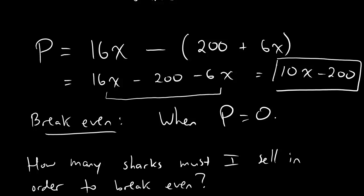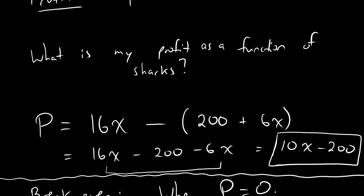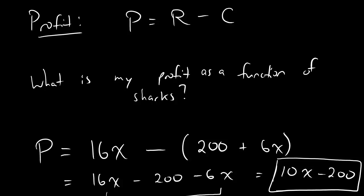All right, dudes. So here's the thing. 10x minus 200 ends up being our final answer for profit, and the only thing we had to do to get that was to take the revenue function minus the cost function and simplify. That's all it is.